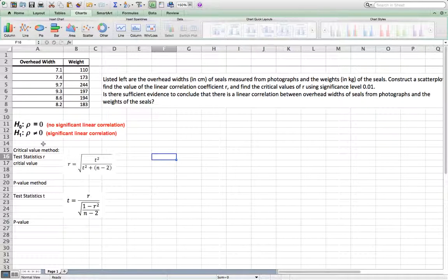There are two methods to do so, one called critical value method. In this method, the test statistic is r, and the critical value is r equals square root of t squared over t squared plus n minus 2. So you need to compare this critical value r against this test statistic r. We both call them r, kind of confusing.